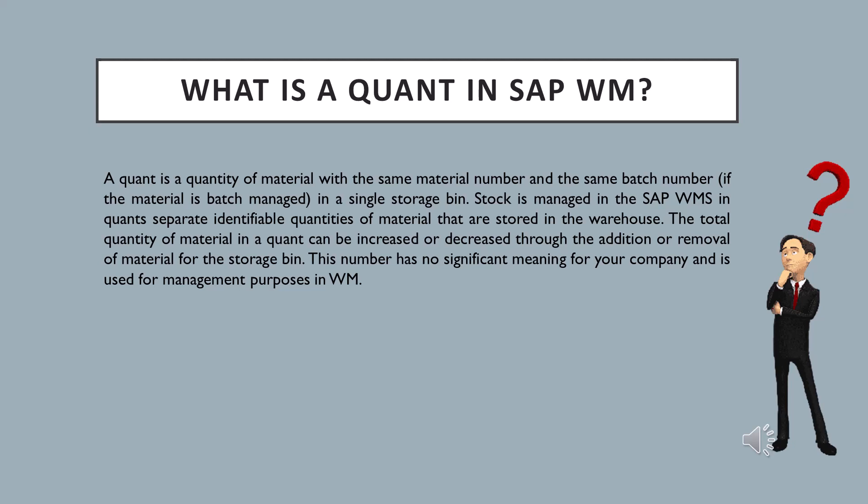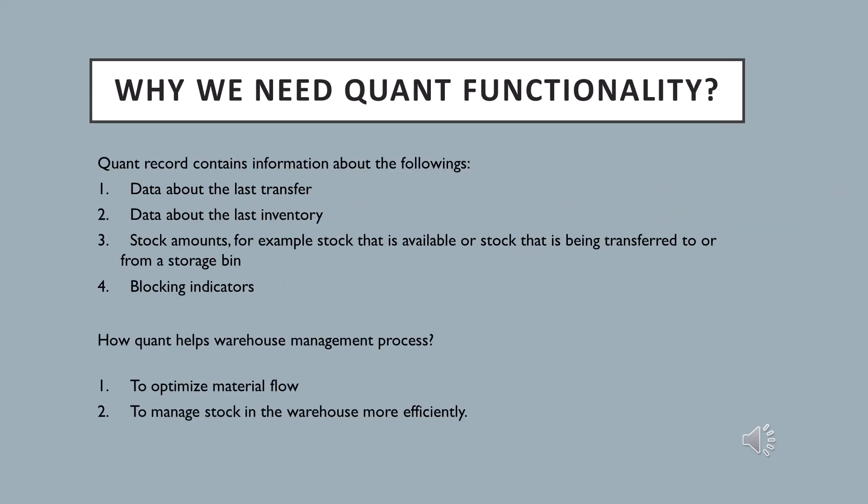The system assigns a random number to the material and this is known as quant. The definition of a quant is: a quant is the quantity of material with the same material number and same batch number in a single storage bin. Basically, a quant is a number used by the system — there is no significance for business purposes, it is only used by the system to manage processes.